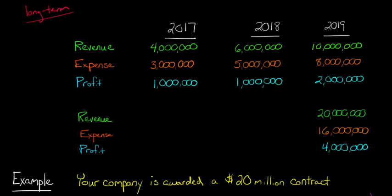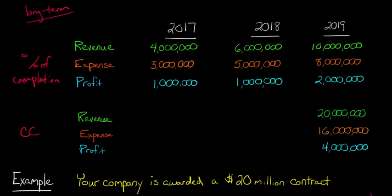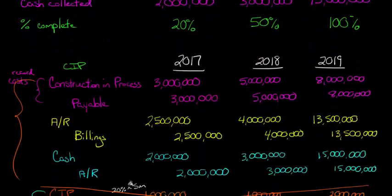Under percentage of completion, we recognize $4 million in 2017 — that's 20% of the $20 million contract. But under completed contract, there's no journal entry at all in 2017 or 2018. We're going to book that full $20 million all the way at the end.